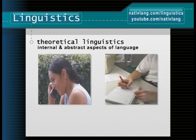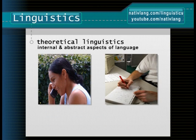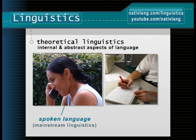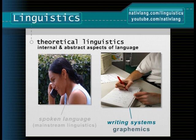But do we study speech or writing in our effort to explain human language? Modern disciplines focus on spoken language, as it's more spontaneous and universal, but we can also learn and theorize about writing systems.